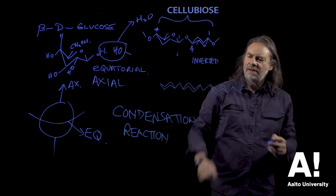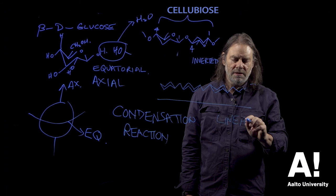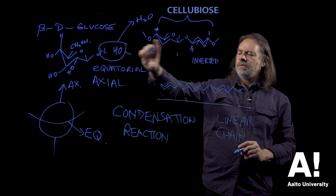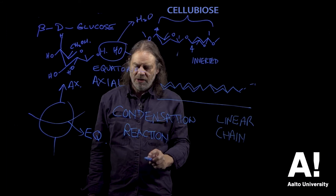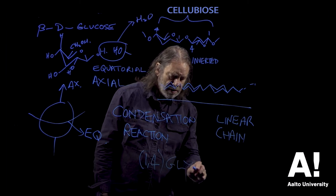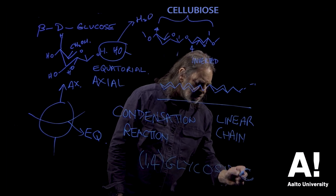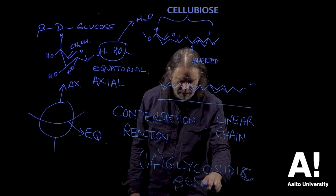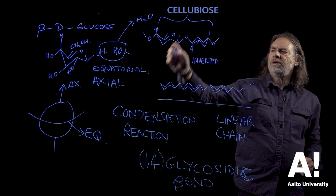So what have we got here? We've got a linear chain. So this type of bonding with the beta-D-glucose molecule is referred to as a 1,4-glycosidic bond. Excuse my writing, it's gone a bit wobbly. 1,4-glycosidic bond because we're bonding through the one and the four position.